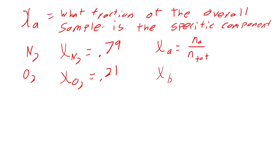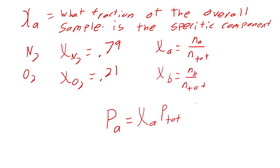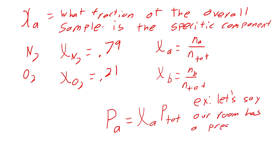The mole fraction of component B would be moles of B over total moles. This matters because it's another way to calculate the pressure of a specific component: the pressure of A equals the mole fraction of A times the total pressure. For example, let's say our room has a pressure of 0.925 atmospheres. What is the pressure of the oxygen?